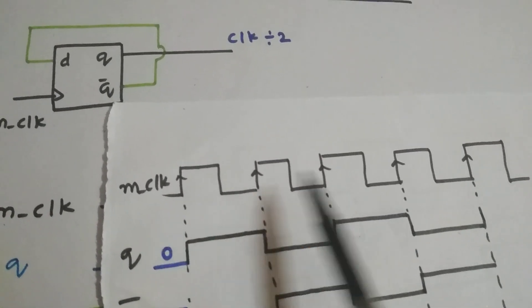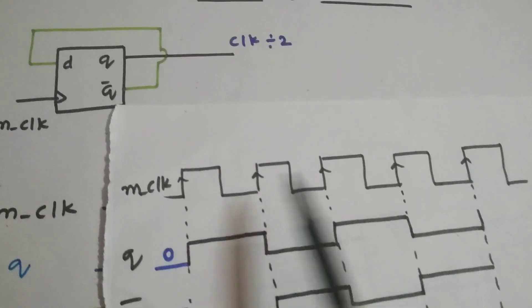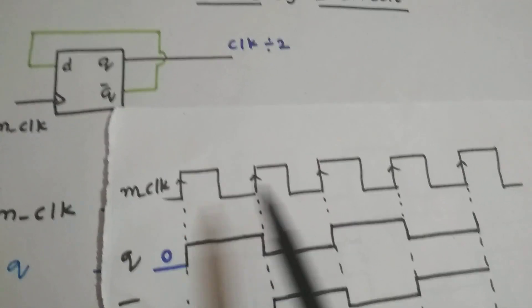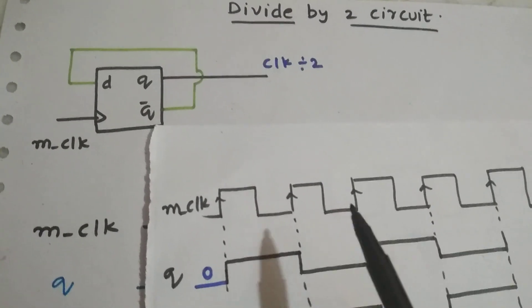As you can see, two clock periods are covered. That means frequency is divided by 2 and time period is doubled. So this is a divide by 2 circuit.